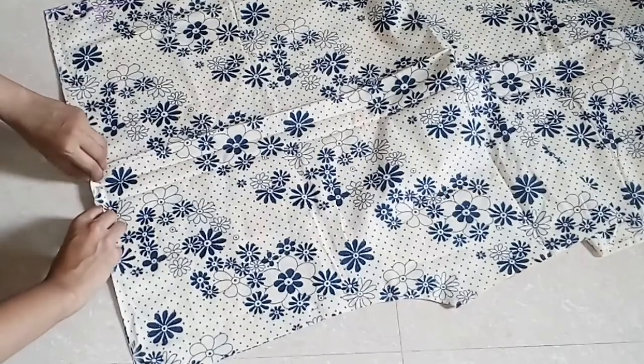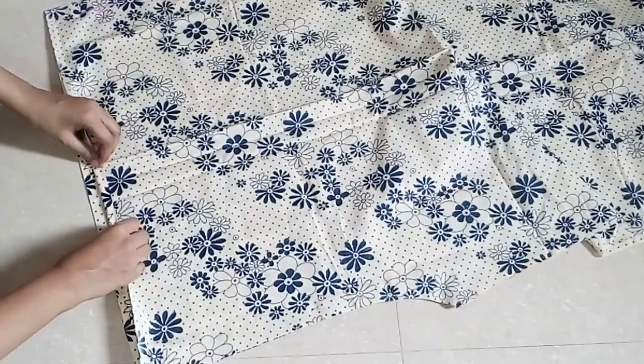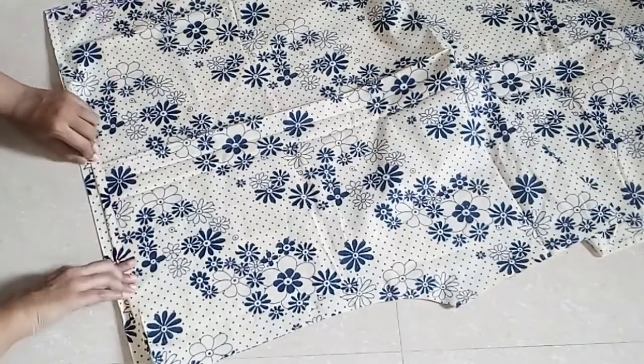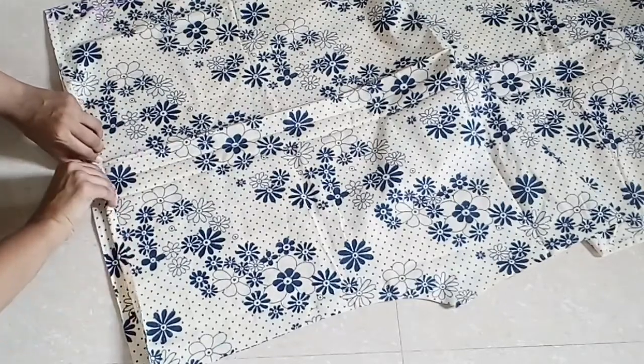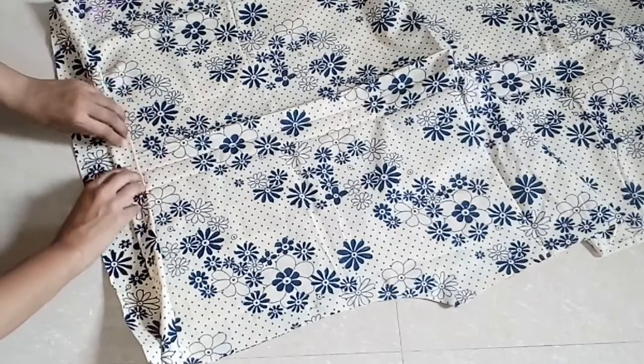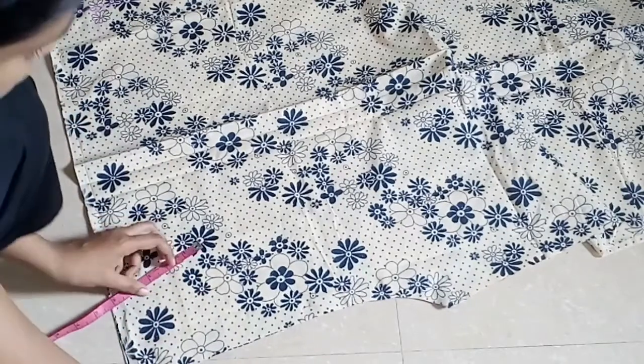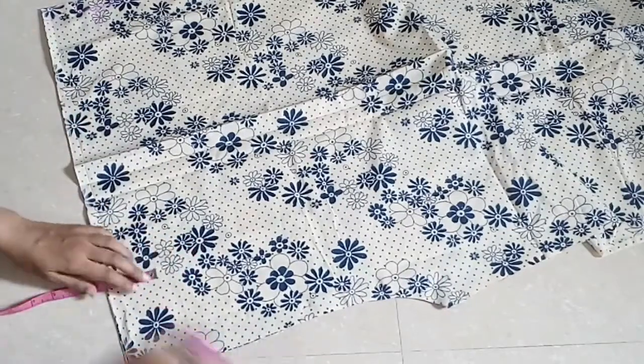We have to make the casing for the elastic. That is, we have to fold a small half an inch of folding and then we have to join it over this 3-inch mark which we have made. If you want, you can make this 3-inch mark all over the palazzo.